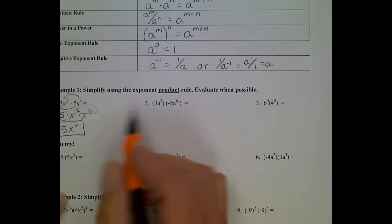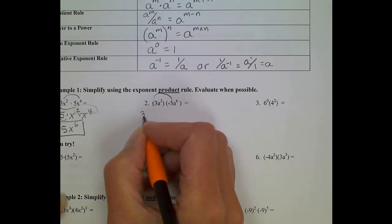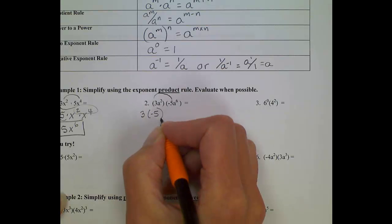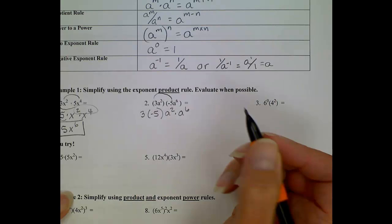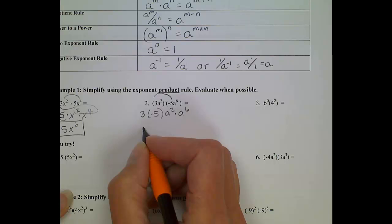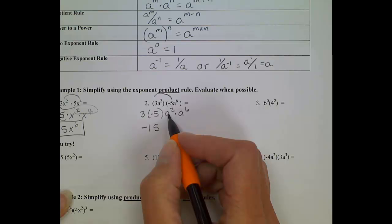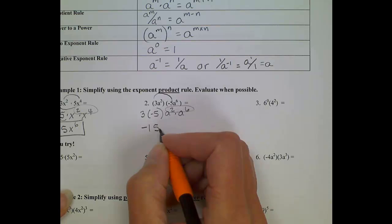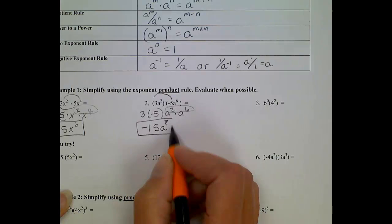So following through, just like we approached problem number 1, I'm going to group my terms together. So I'm going to put 3 and negative 5 beside each other, and then I'm going to have a squared times a to the 6th. A positive times a negative value will give me negative 15. My base is the same, so a to the 2nd times a to the 6th, I'm supposed to add those exponents, that'll give me a to the 8th. Final answer, negative 15 a to the 8th.